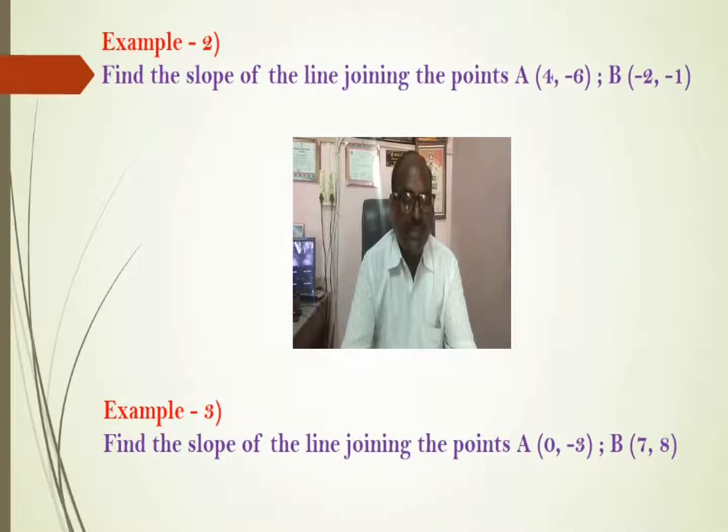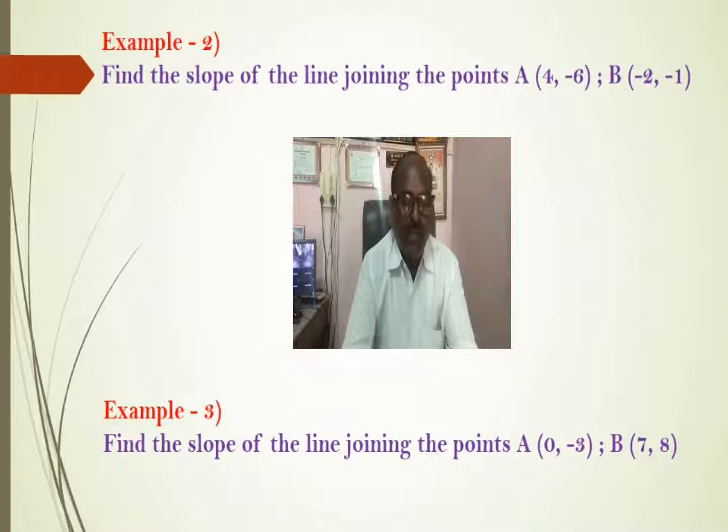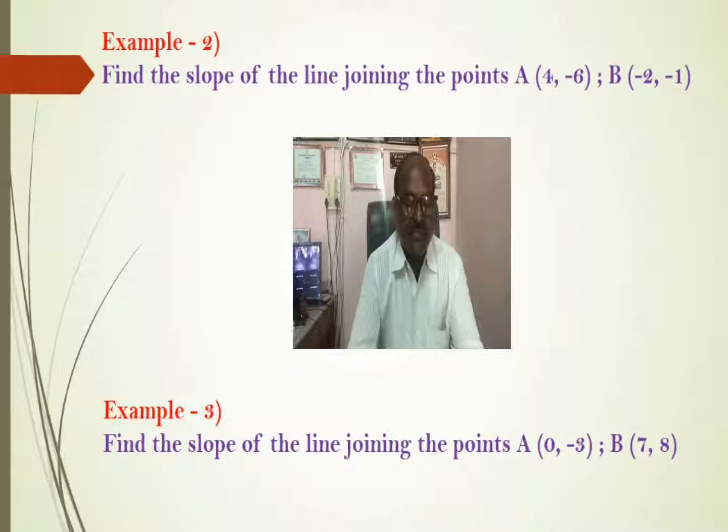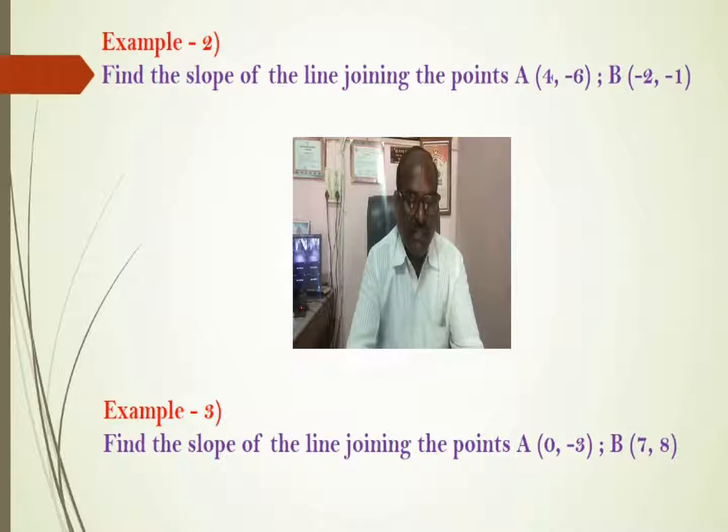The examples such types are: find the slope of a line joining the points A (4, -6), B (-2, -1). Next example is, find the slope of line joining the points A (0, -3), B (7, 8).